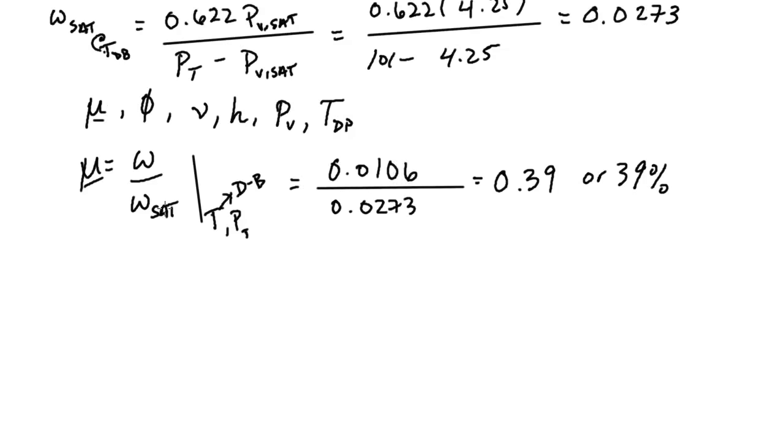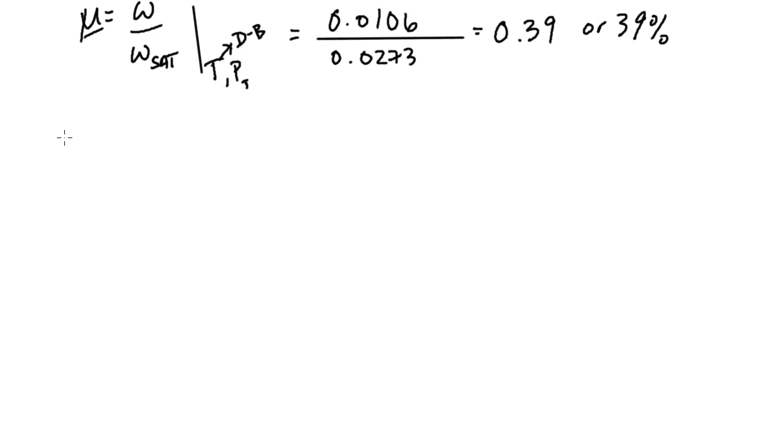So move on to relative humidity. In a previous video, we used the relationship of mu and some other formulas for specific humidity, and we derived this formula for relative humidity. And it's a fraction. We have mu over 1 minus 1 minus mu, and that's multiplied by the partial pressure at saturation divided by the total pressure. And this here is at our dry bulb temperature.